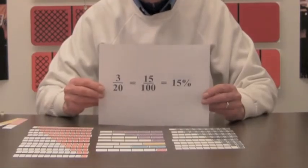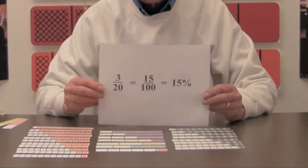But on the other hand, lowest terms may not be convenient. For example, the fraction three-twentieths is in lowest terms. But if we wanted the percent for this fraction, then the equal fraction fifteen-hundredths would be much more convenient.